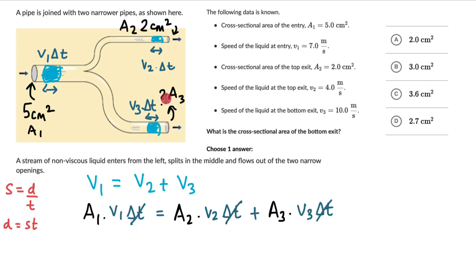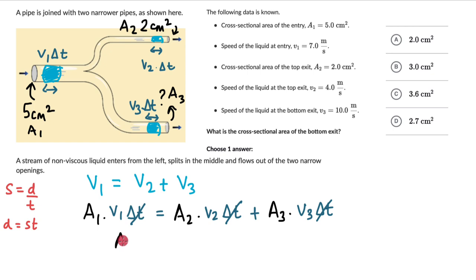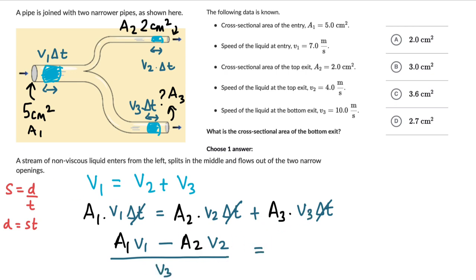We need to find A3; everything else is known — V1, V2, V3 are given, and we know A1 and A2. Keeping A3 on one side: A3 = (A1 × V1 − A2 × V2) / V3.